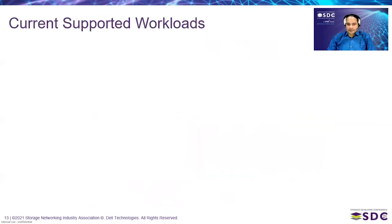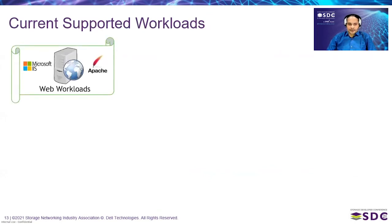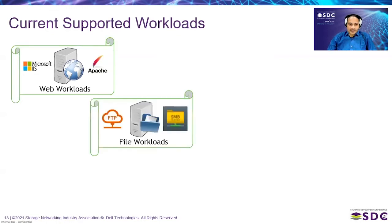The solution supports traditional workloads that end users run in their data centers. For web workloads, we run an IIS web server on the system and hit it with multiple virtual users through multiple containers over HTTP. For file workloads — FTP, SMB, NFS — the JMeter containers keep writing, reading, and creating files, simulating real file operations to generate high traffic over the network as well as disk stress.